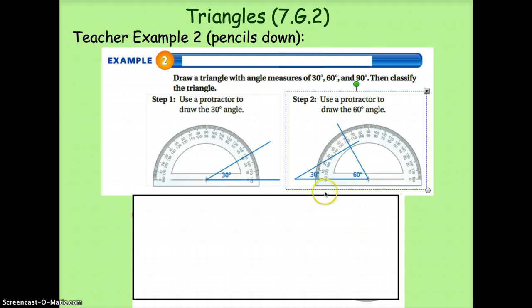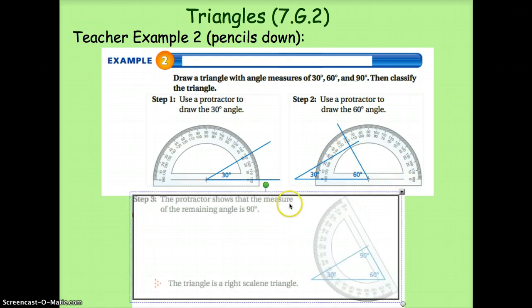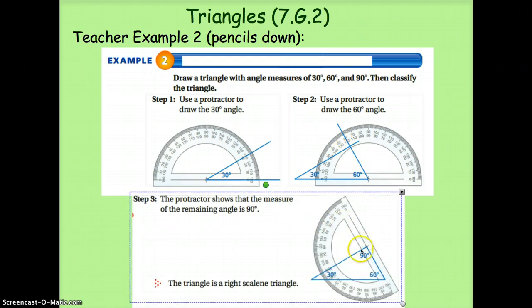We'll want to double check this angle, but it should be 90 degrees. So when we measure it, we can see that it is exactly 90 degrees with our protractor. So therefore, this is a right scalene triangle.